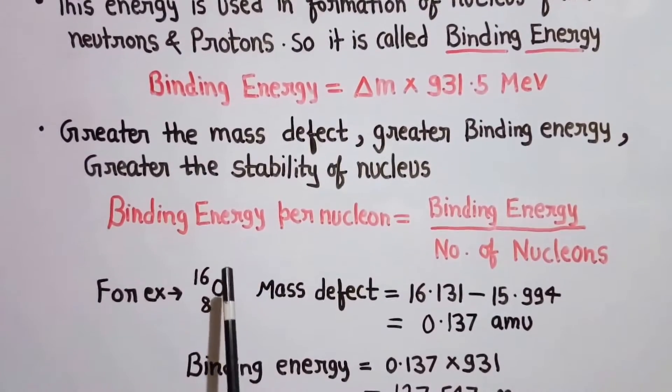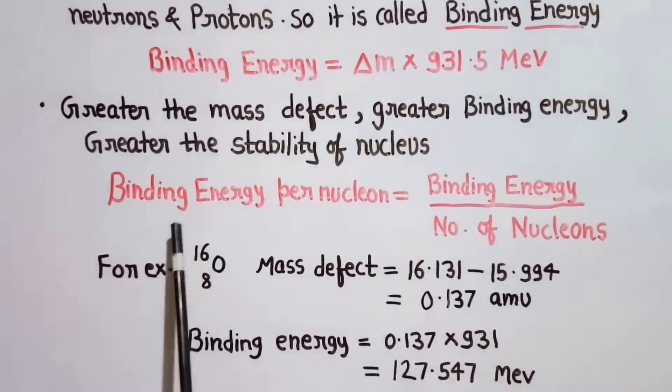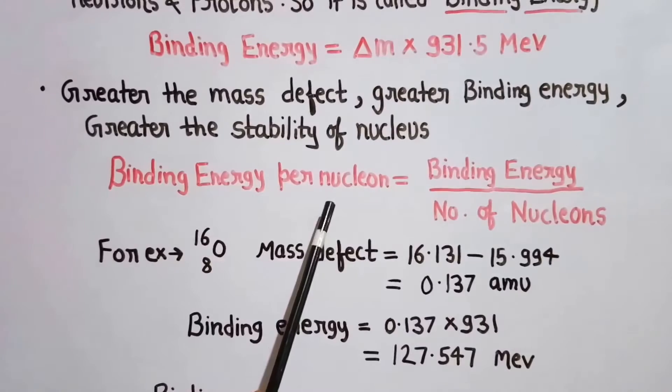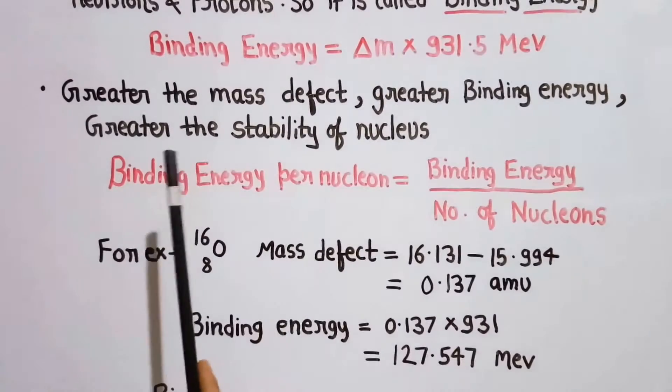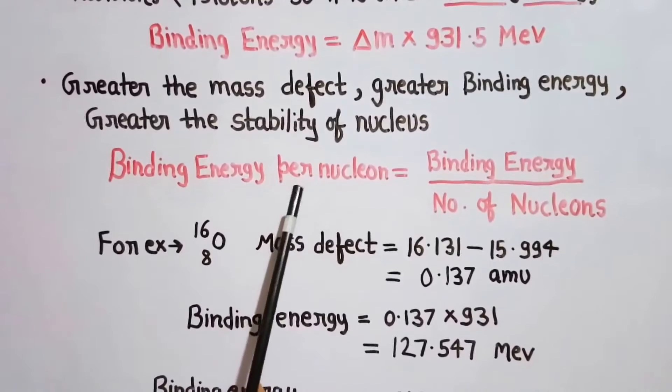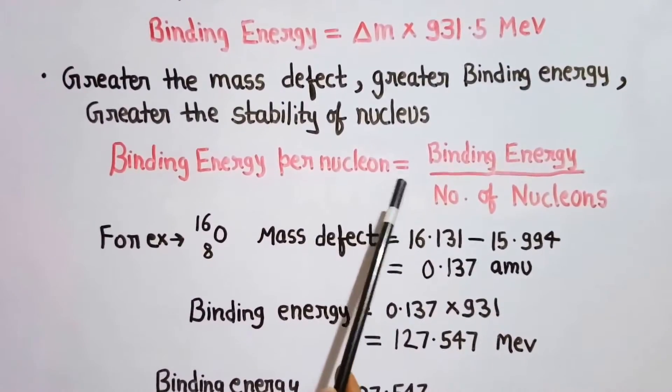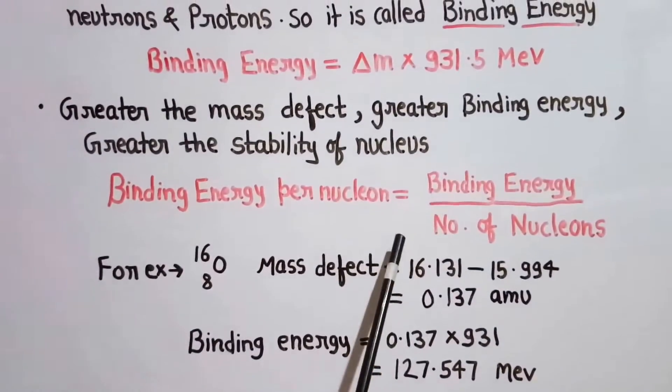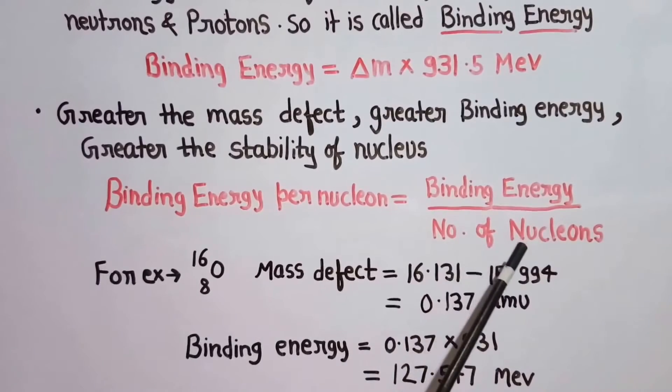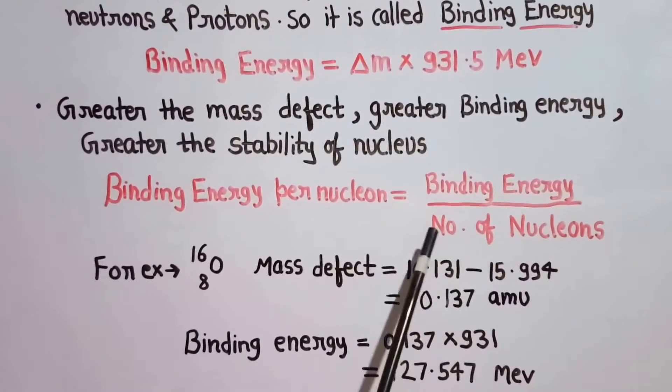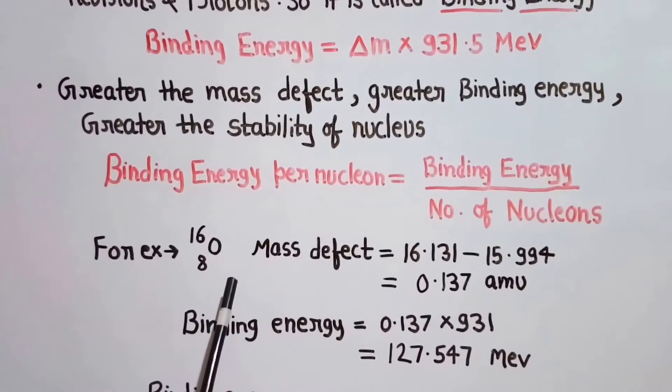Now, there is another term that is known as binding energy per nucleon. It is given by binding energy divided by the number of nucleons. We will understand all these in the case of oxygen.